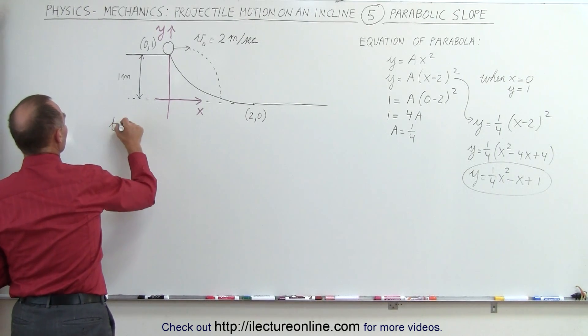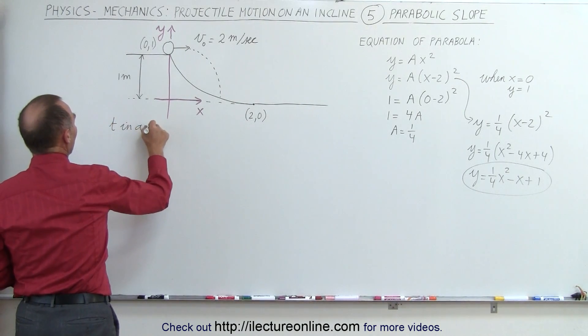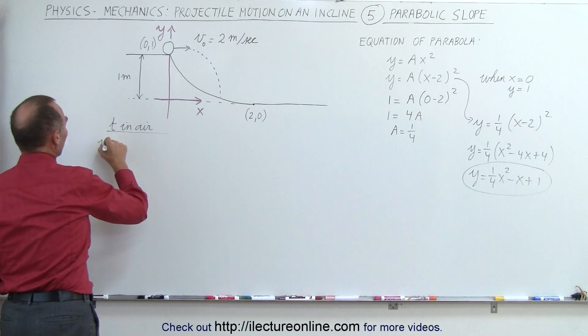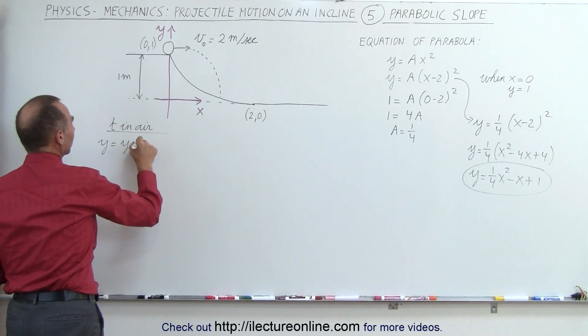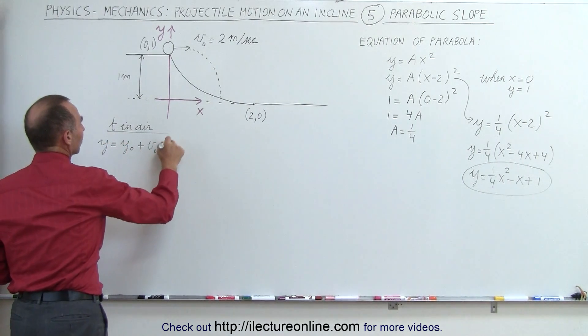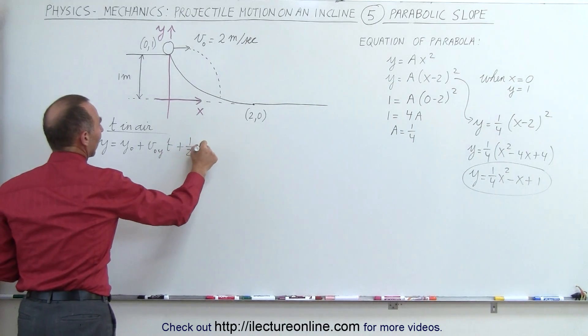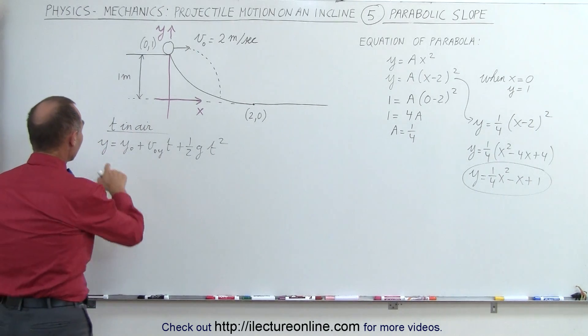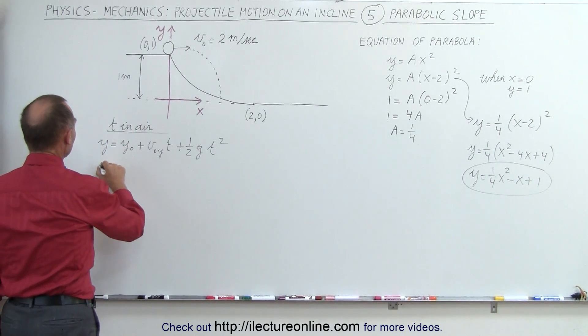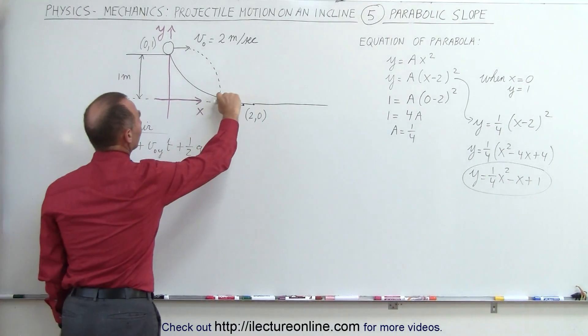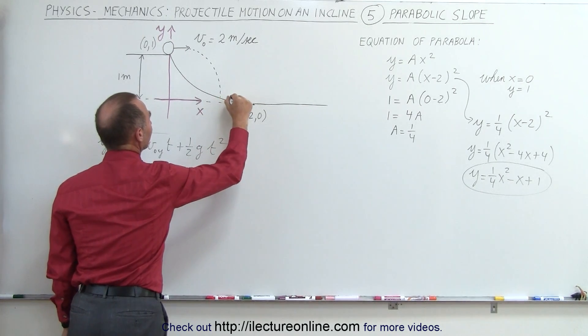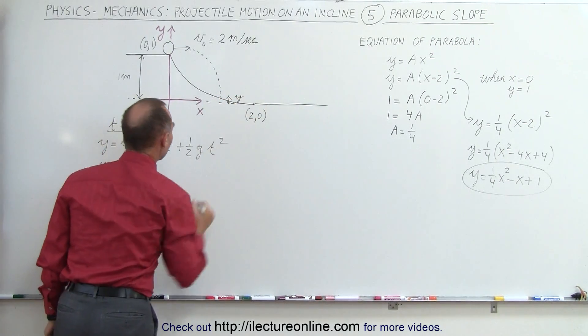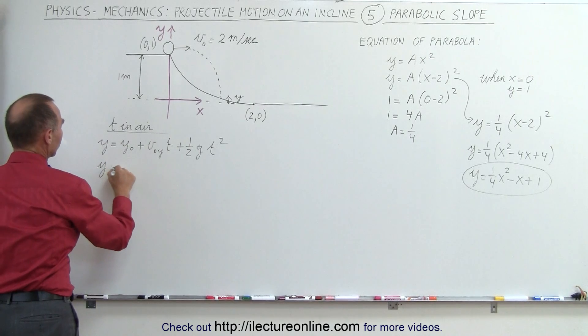First, the equation for time in the air in the y direction, we get y equals y sub naught plus v sub naught in the y direction times time plus one half g t squared. Let's plug in what we know. The final height is y. We don't know what that is.